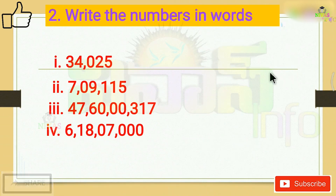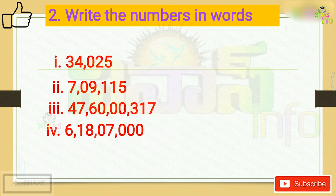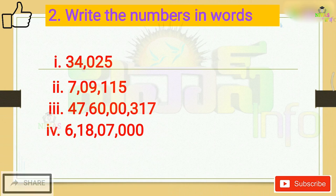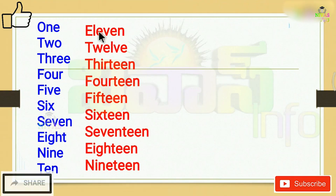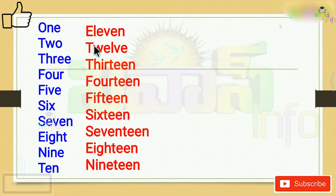In Exercise 3, the second question asks us to write numbers in words. If we have a number, we can write it out in words. We must know number words. First of all, 1 to 10 — we have to memorize the number words from 1 to 10.